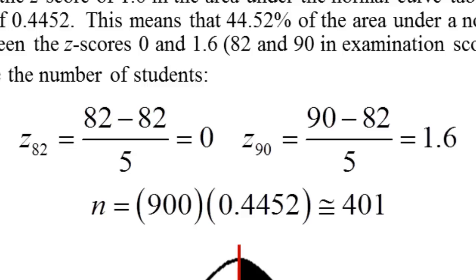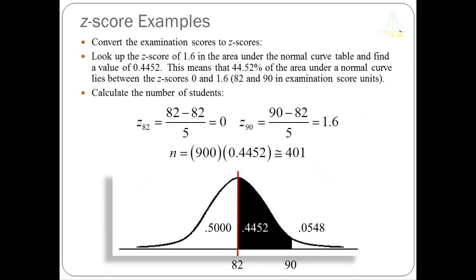I didn't really have to calculate that Z-score, but I did it just to show you the outcome. The more important Z-score is the one for a score of 90. Here I take my test score of 90 minus the mean of 82, divide by 5, and I get a Z-score of 1.6. I know that half the distribution has values below 82, labeled as 0.5000. By going to the Z-table in the book, I learned that the area between a mean of 0 and a Z-score of 1.6 is 0.4452. So the probability of having scores between 82 and 90 is 0.4452.